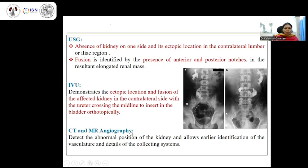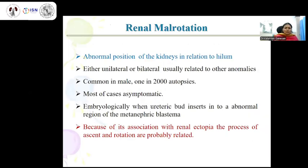CT and MR angiogram detect the abnormal position of the kidneys, allow earlier identification of the vasculature, and provide details of the collecting system. Regarding renal malrotation — abnormal position of the kidneys in relation to the hilum — it can be unilateral or bilateral, is usually related to other anomalies, and is more common in males. Because of its association with renal ectopia, the processes of ascent and rotation are probably related, so whenever a child has renal malrotation, it is always associated with renal ectopia as well.